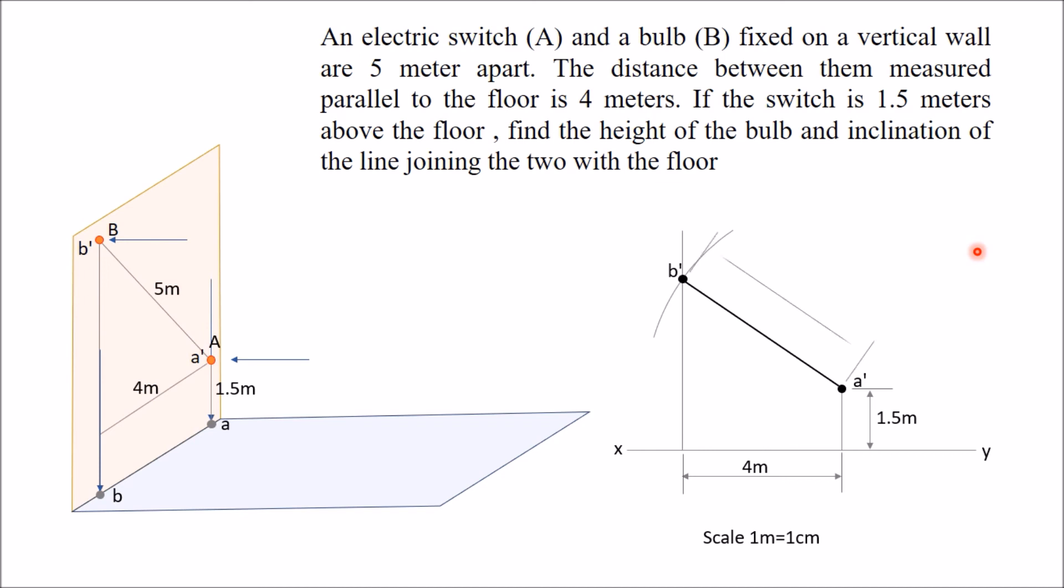Now you have to determine the height of this B dash. Just use your scale and measure this height from the XY line. When you measure this, you will get the value of 4.5 meters. And using a protractor, measure this angle. Draw a line which is parallel to the XY line from A, and measure this angle. When you measure, approximately you will get 37 degrees.